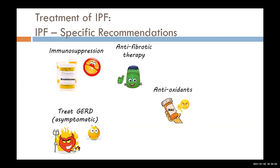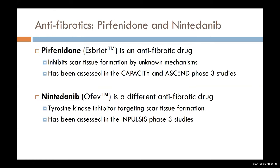The last area I want to finish on is antifibrotic therapy — we're targeting the scar tissue itself. There are two antifibrotic drugs on the market in Canada. One is called pirfenidone, brand name Esbriet — I'll use pirfenidone going forward. Pirfenidone inhibits scar tissue formation by unknown mechanisms and has been assessed in several phase three trials called the CAPACITY and ASCEND trials.